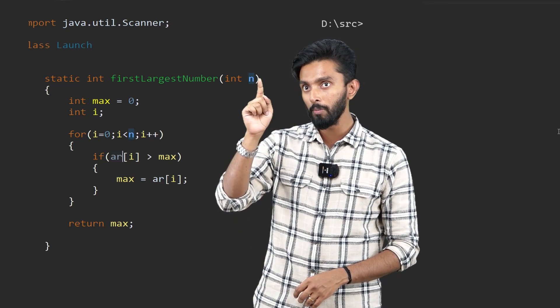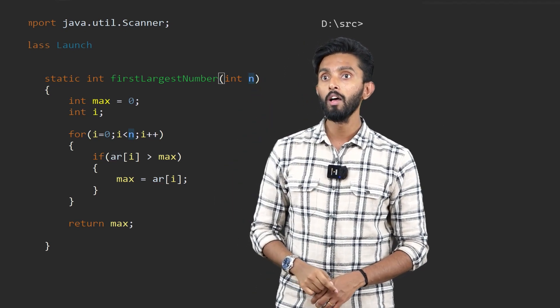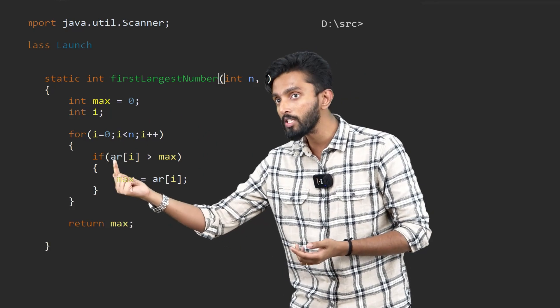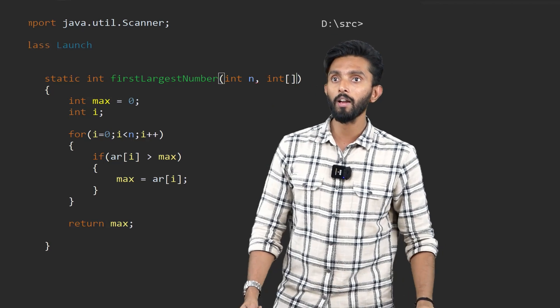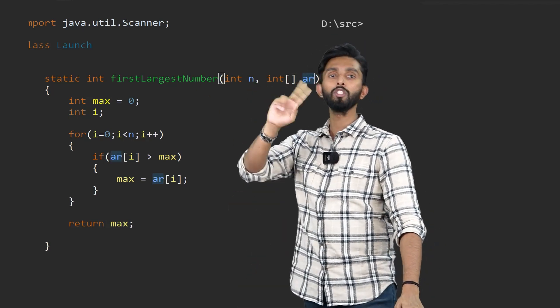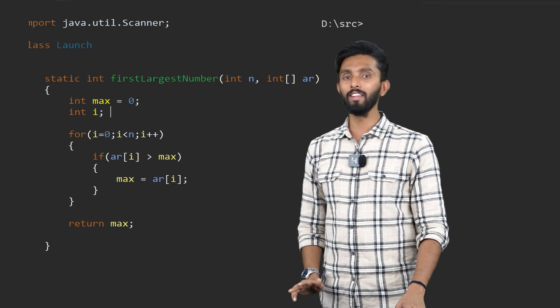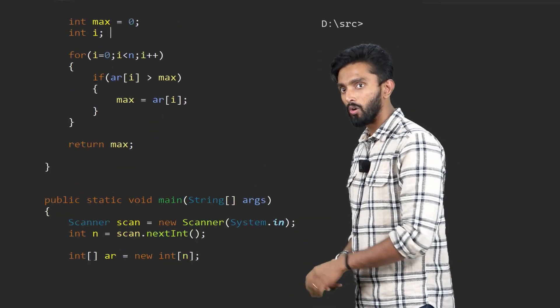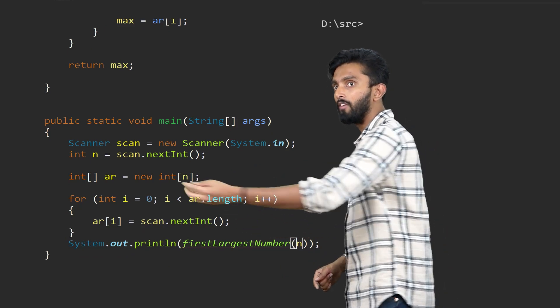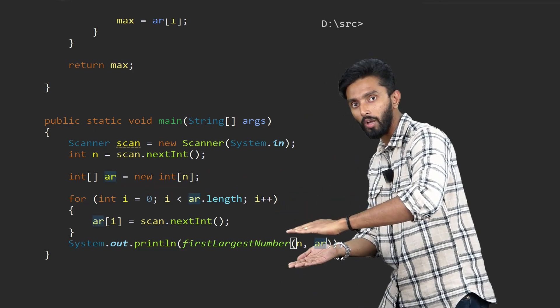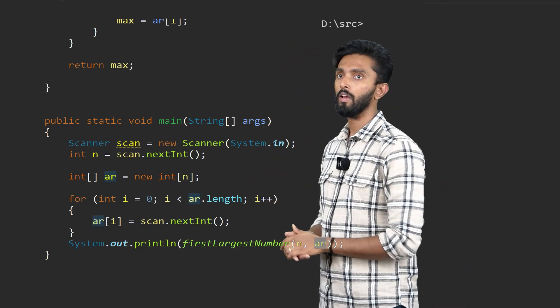But first of all, they will give you two inputs here. One is n value. That is the total number of elements. One more thing they will give you is the array. Without the array, how will you do all this looping? What is AR? So 100% here, they will give you an integer array called as AR. Two inputs they will give you. N value they will give you. AR they will give you. Array they will give you. Scroll down. Here also, see. When they are calling this function, they will give n also. They will pass this array AR. Two things will be given as input. N value and the array.